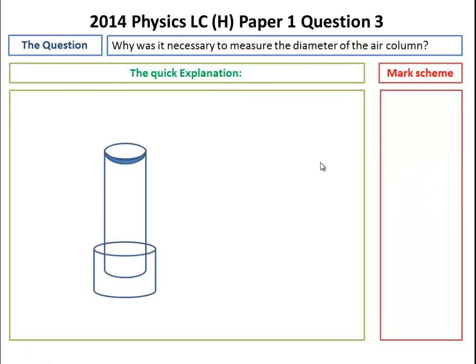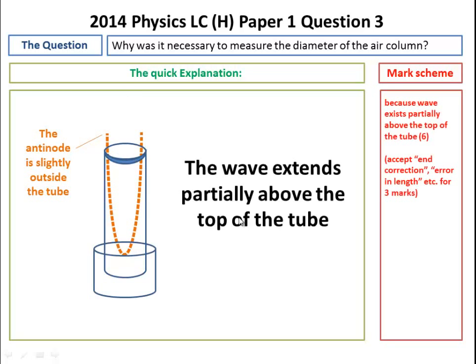This part asks why it's necessary to measure the diameter of the air column. So we think we mentioned earlier that the antinode is slightly outside the tube. The antinode is the highest bit, the peak of the wave there. And all I'll give to say is that wave extends partially above the top of the tube.